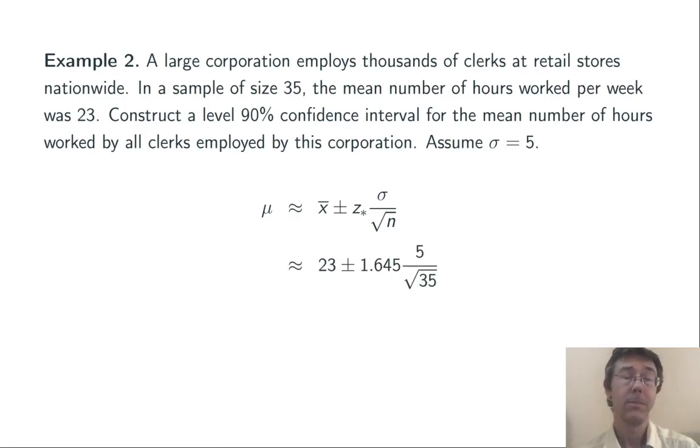Now we plug in numbers. X-bar is 23, sigma is 5, and n is 35. The z-star corresponding to a 90% confidence level is 1.645.